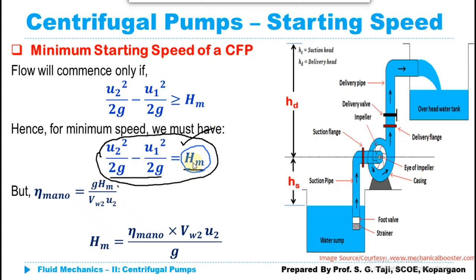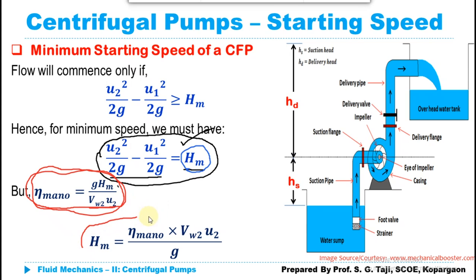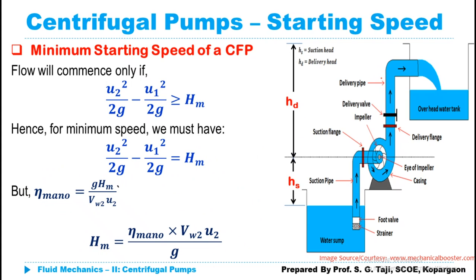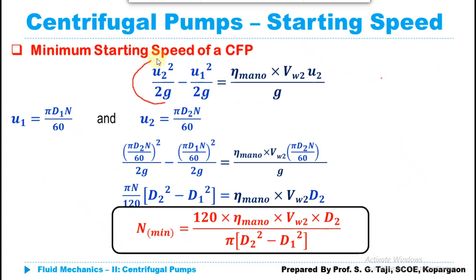We know that H_m is the manometric head, and the manometric efficiency is given by: η_m = g·H_m / (V_w2 × u₂). Writing this in terms of manometric head gives: H_m = η_m × V_w2 × u₂ / g. Substituting this expression for H_m into the minimum speed equation: (u₂² − u₁²) / (2g) = η_m × V_w2 × u₂ / g.